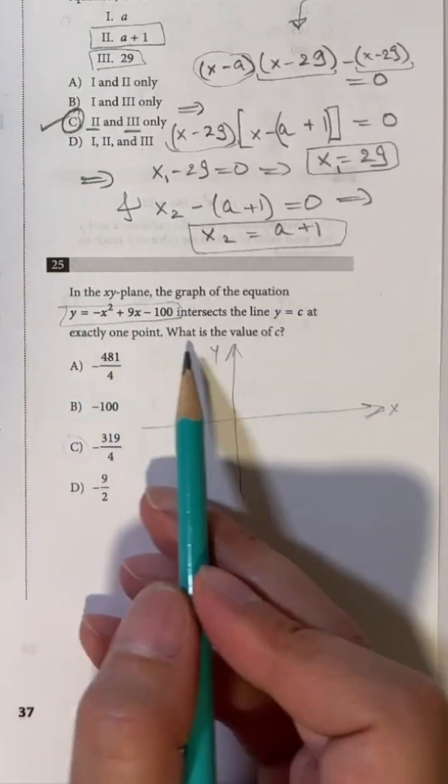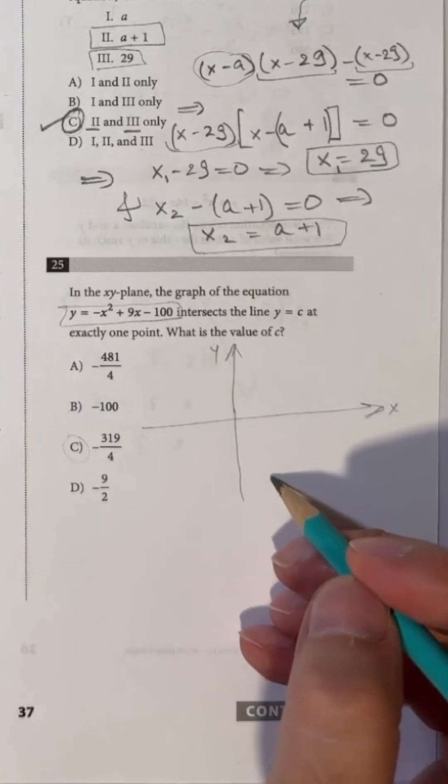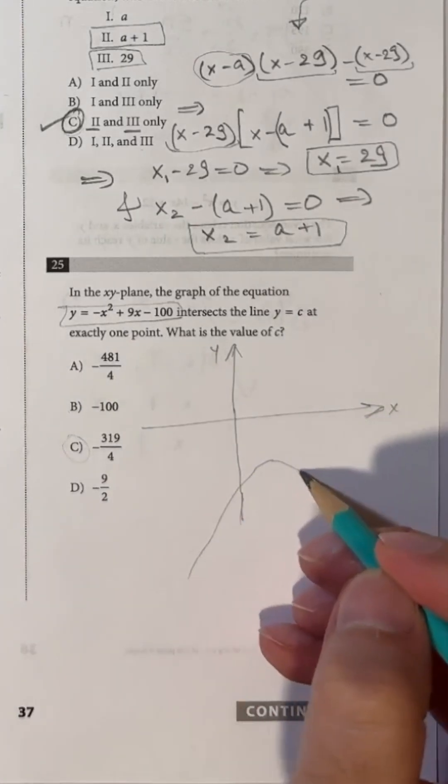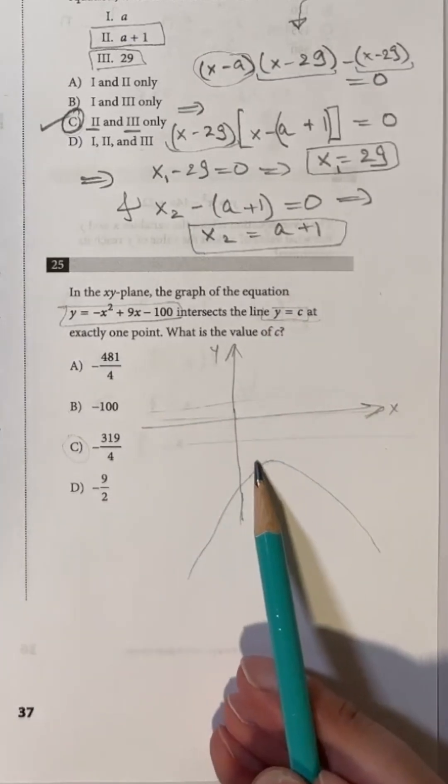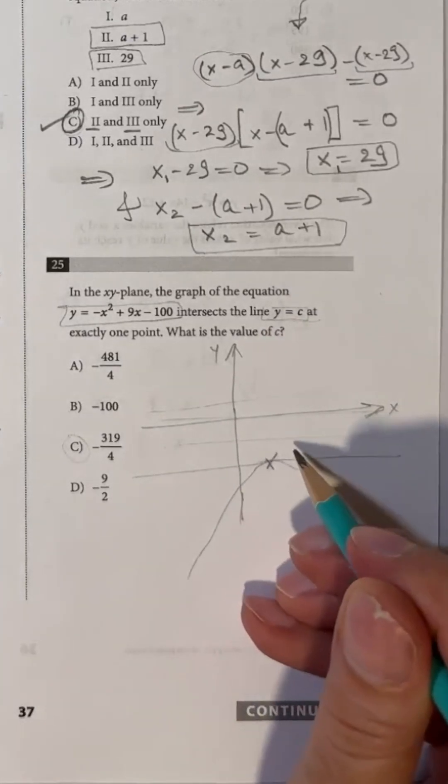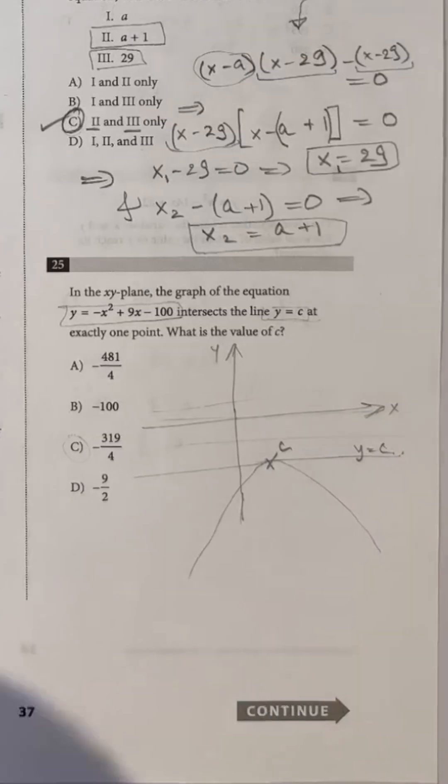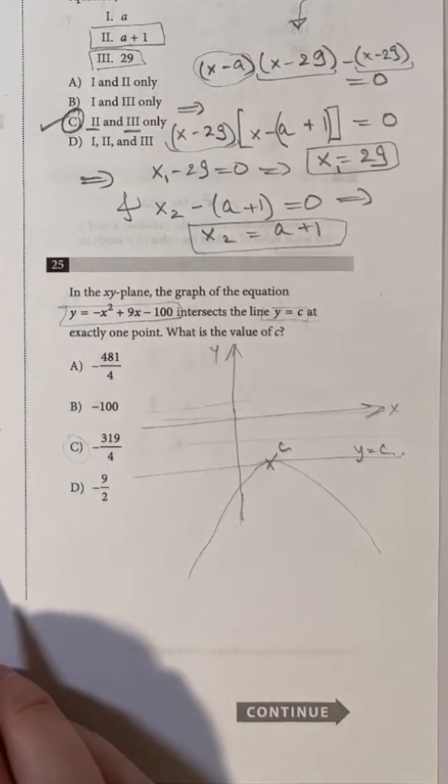The graph of this equation is an inverted parabola, one that is downward facing because of the minus sign in the coefficient of x squared. So y equals c is the horizontal line parallel to the x-axis which intersects the top point of the parabola.